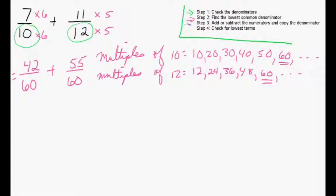We're going to move on to step 3 now. That's adding or subtracting the numerators and copying the denominator. So 42 plus 55 is 97. And we're going to copy the denominator down.